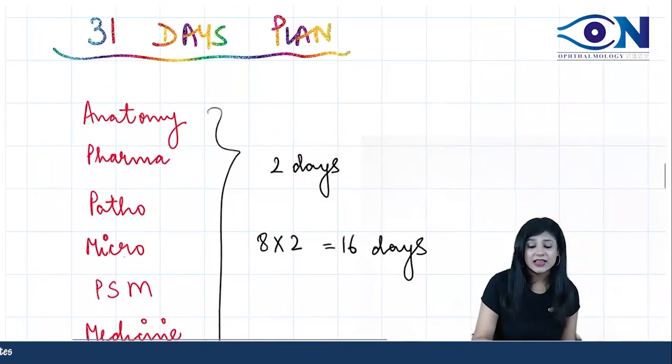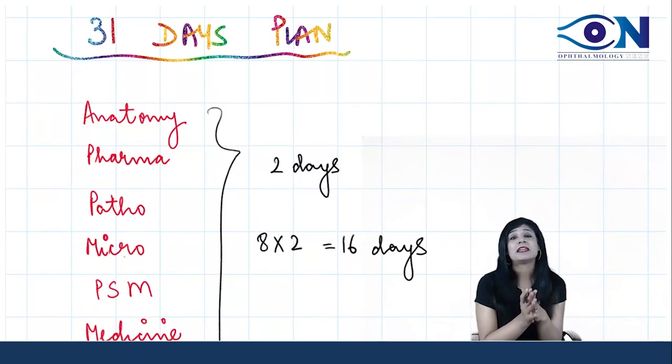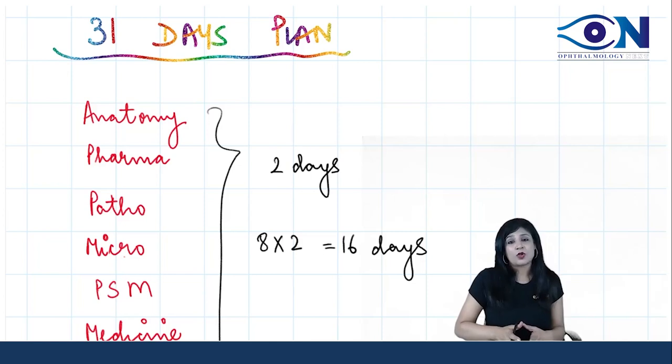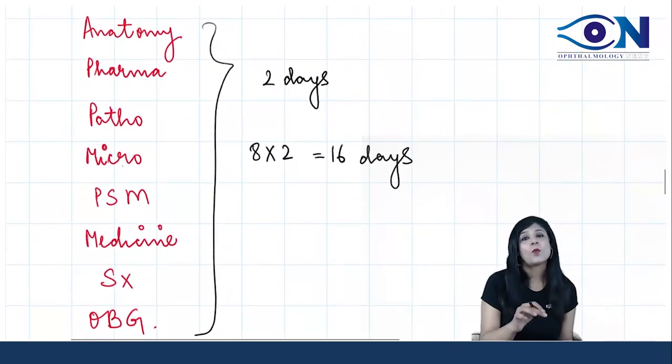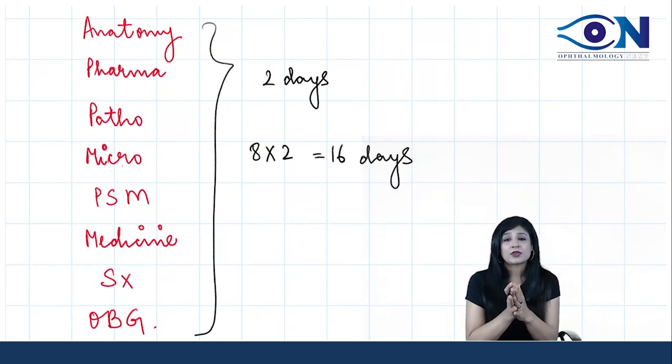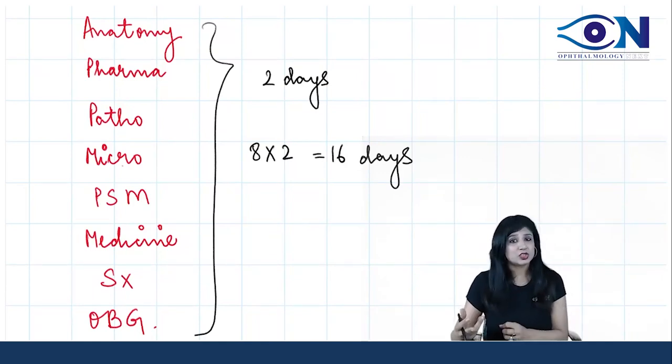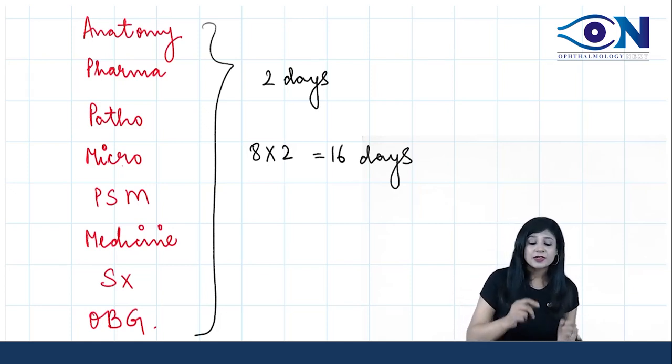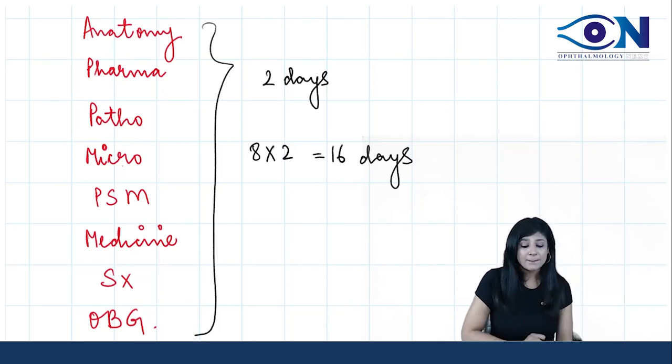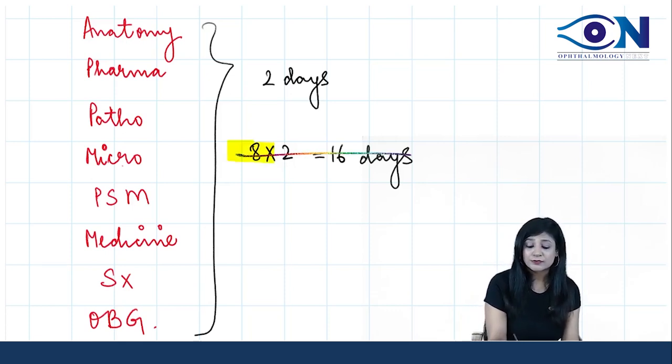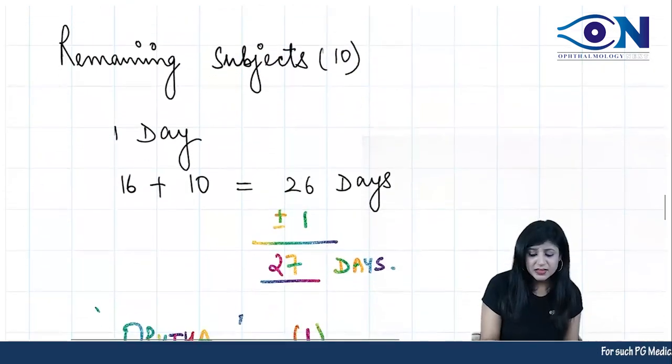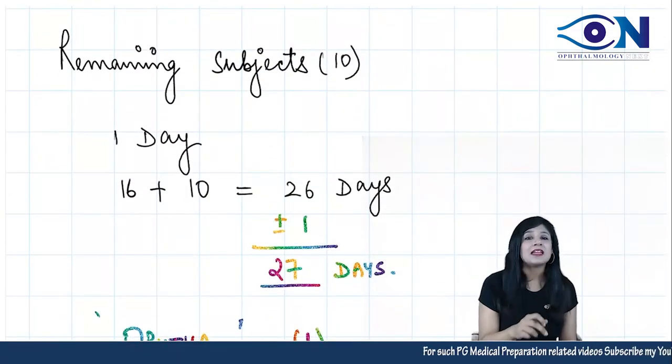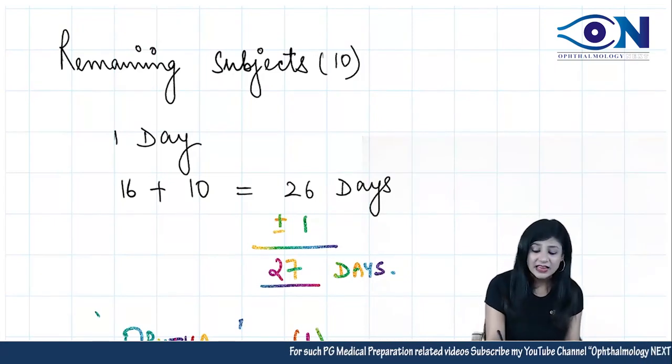The 31 days plan: I have to complete 19 subjects and give grand tests also. There are certain subjects which cannot be completed in one day, so I have given two days. If something is left, we have one more revision. It is anatomy, pharma, patho, micro, PSM, medicine, surgery, and gynae - these eight subjects get two days. Eight into two makes total 16 days.